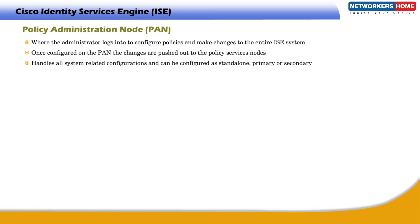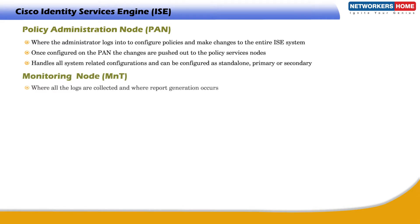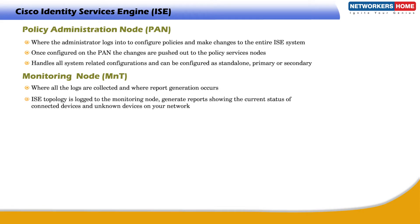The PAN can be configured as Standalone, Primary, or Secondary. The Monitoring Node is where all the logs are collected and where report generation occurs. Every event that occurs within the ISE topology is logged to the Monitoring Node. You can then generate reports showing the current status of connected devices and unknown devices on your network.